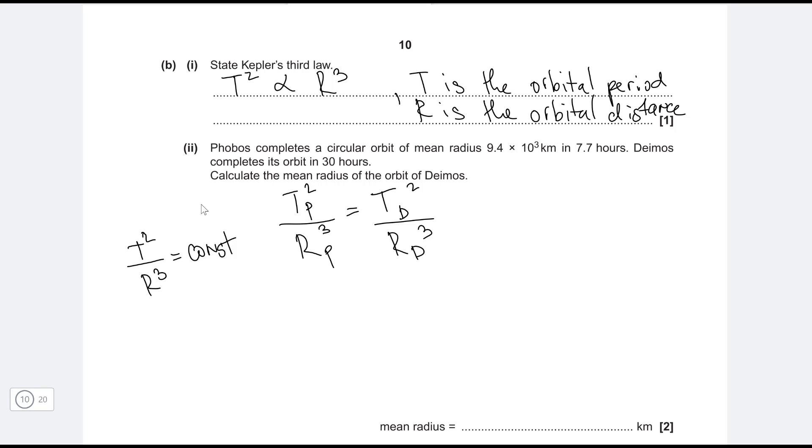And whenever we come across a similar question on Kepler's third law, we'll be able to almost instantly just write this in. Okay, well in this case we're looking for the mean radius of the orbit of Deimos, which is just really the orbital distance of Deimos.